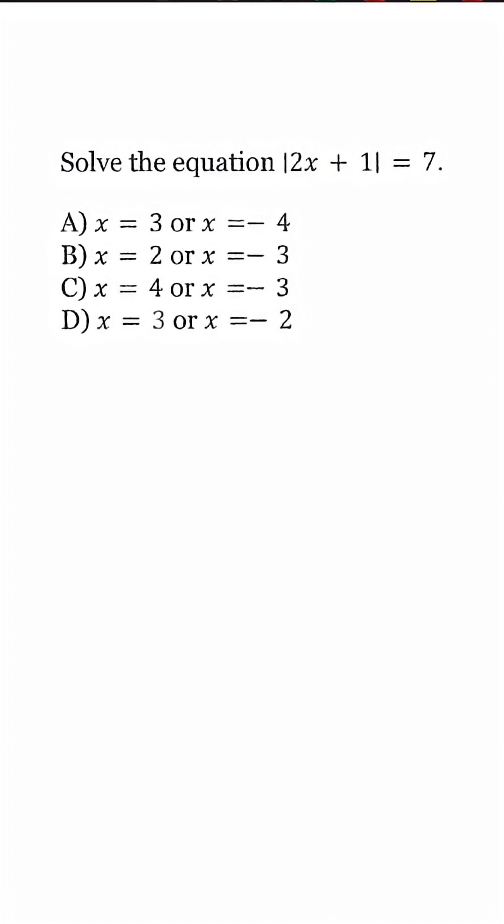When we look at this absolute value equation problem, we notice that it is already isolated, so there's no further steps for us to do apart from set up our equations. So the first equation, absolute value of 2x plus 1 is equal to 7, stays the same.